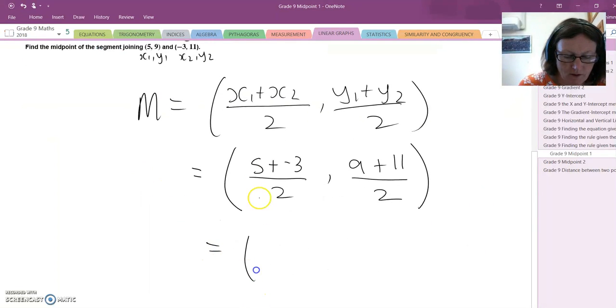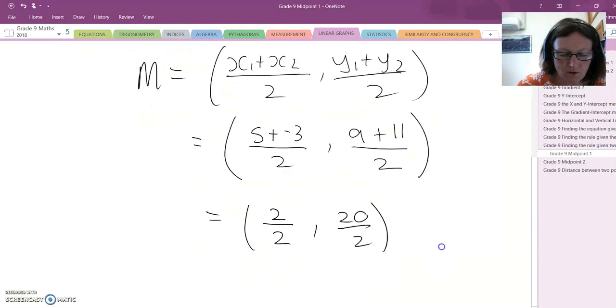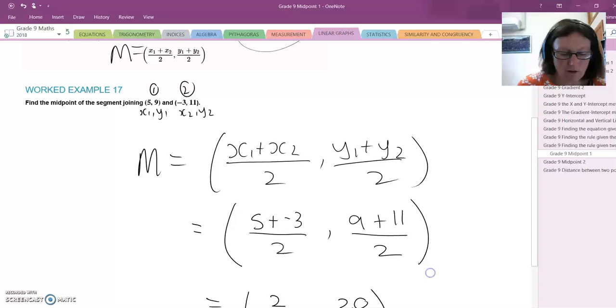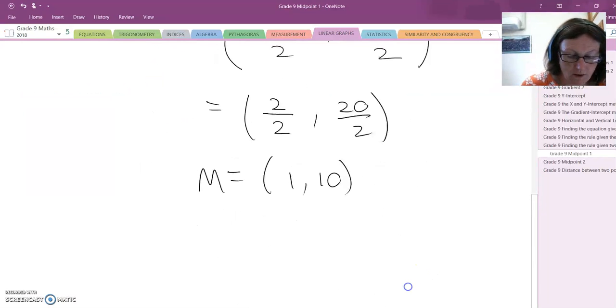I've then got 5 and negative 3 gives me 2, divided by 2. 9 plus 11 is 20, divided by 2. 2 divided by 2 is 1. 20 divided by 2 is 10. So the point halfway along this line is the point 1, 10.